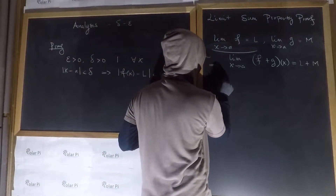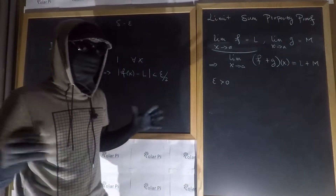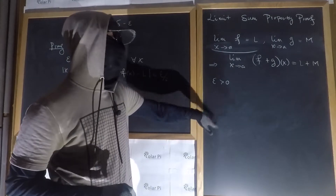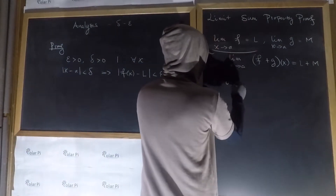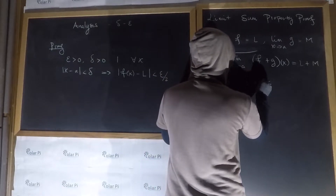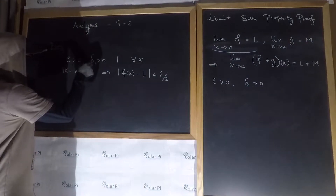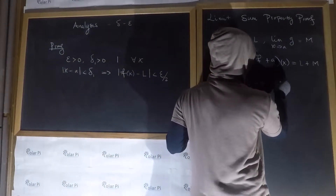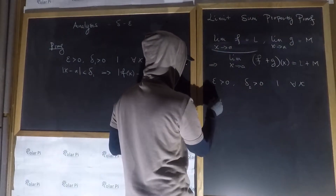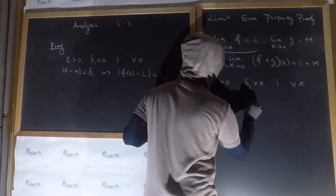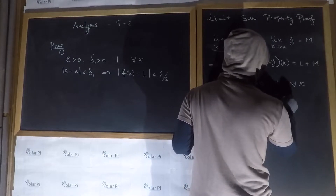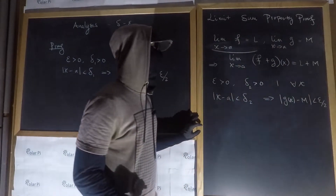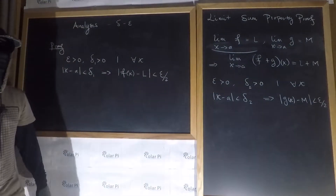For every epsilon greater than zero — and this epsilon is the same epsilon as before, because epsilon just stands for arbitrarily small positive real number — we must be able to find a delta greater than zero. Since F and G are different functions, this delta may be different, so I'll call it delta two. For all x, whenever |x - a| < δ₂, it immediately follows that |g(x) - M| < ε/2. The reason I can write epsilon over two here is the same reason I could write epsilon over two for f.